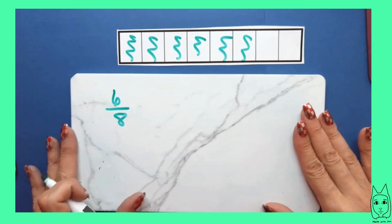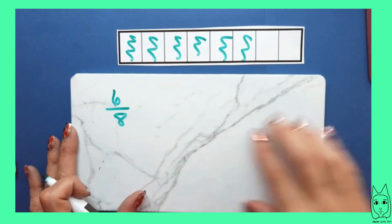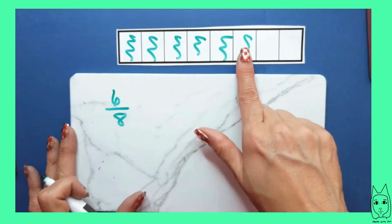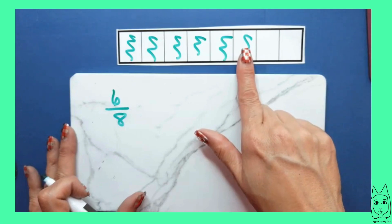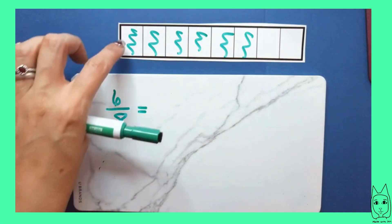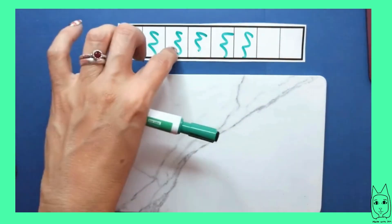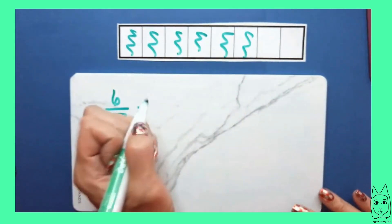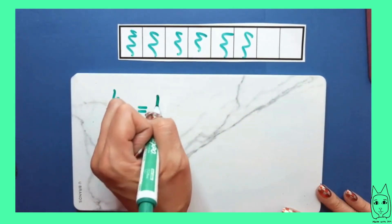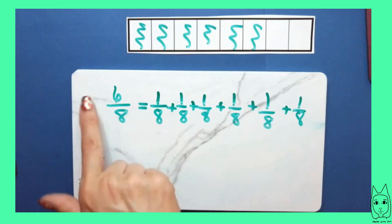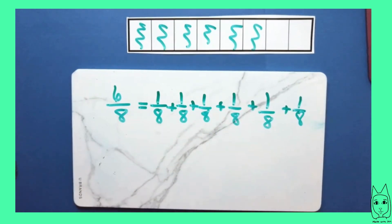For this example, we're going to look at the fraction six eighths. I have six of the parts I need to make a whole. In order to get six eighths, I need six of those eighths. The sum of six one-eighths would give me six eighths.